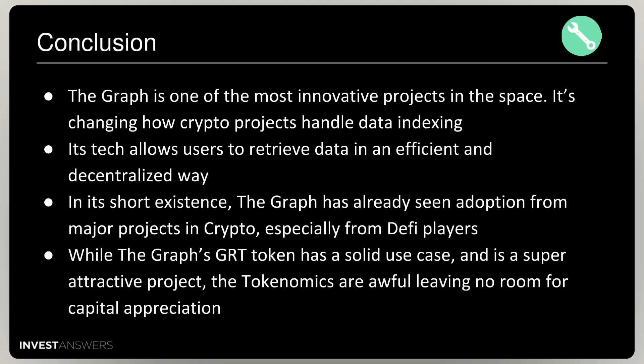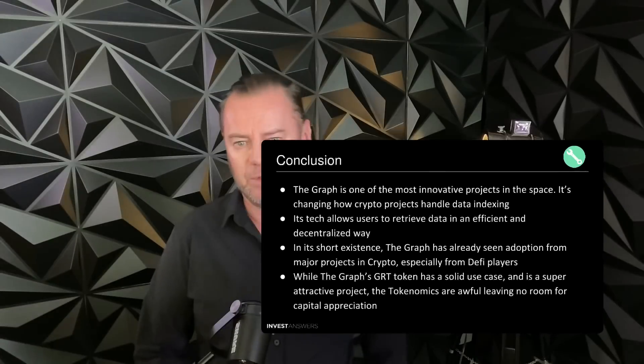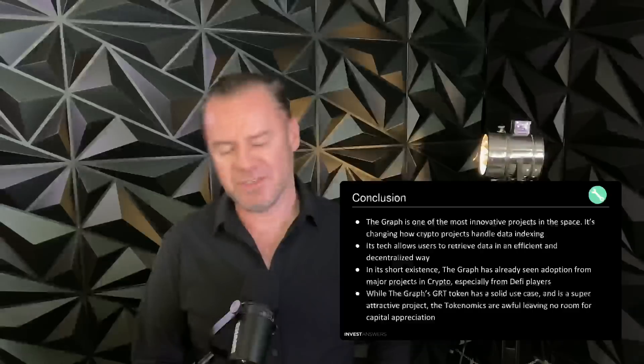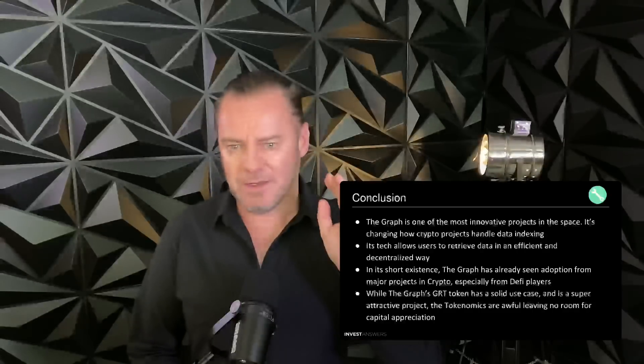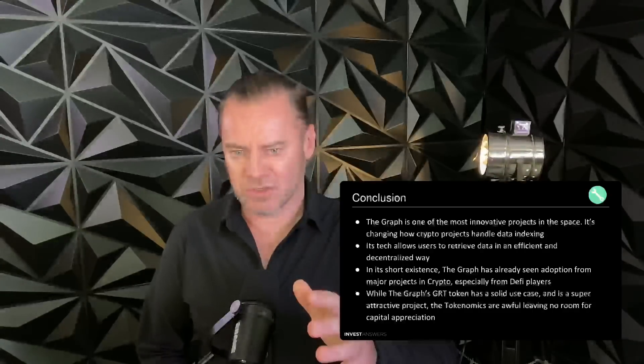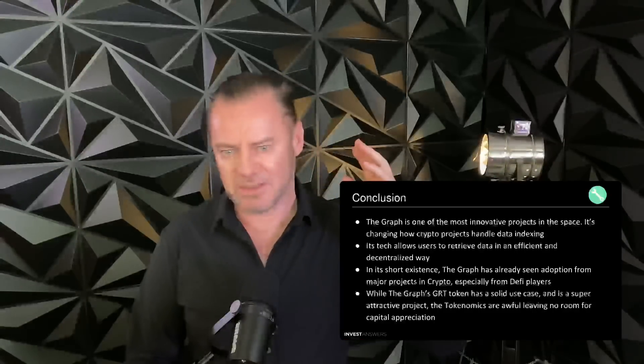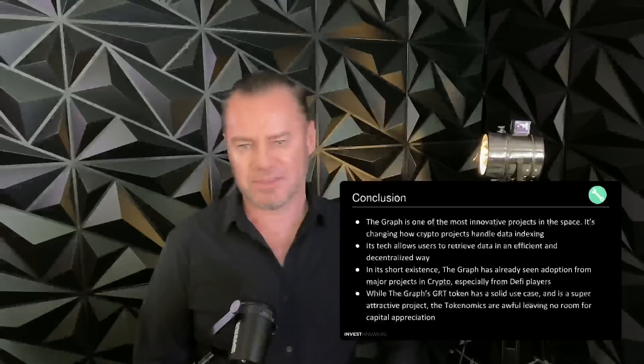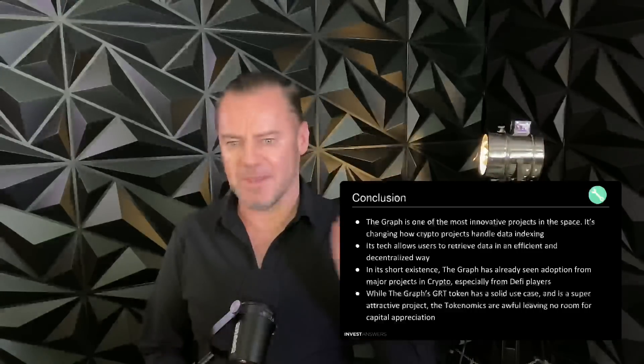While the graph token has a solid use case and is super attractive as a project, the tokenomics are just awful, leaving no room for capital appreciation. There are better places to put your money. The way the founders structured the tokenomics and lined their pockets, combined with the dumpage over the next four years, is reason to stay away.